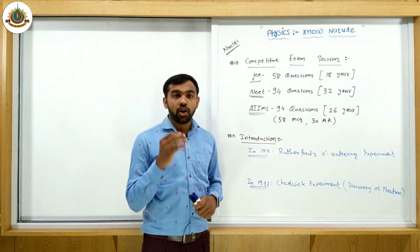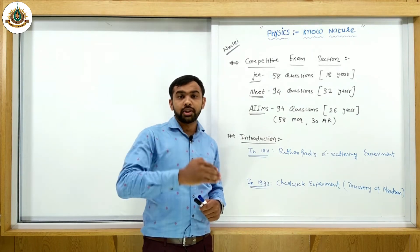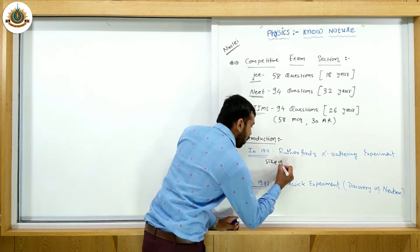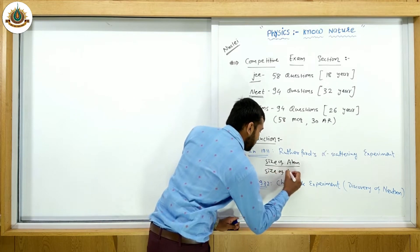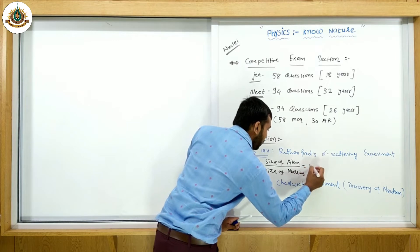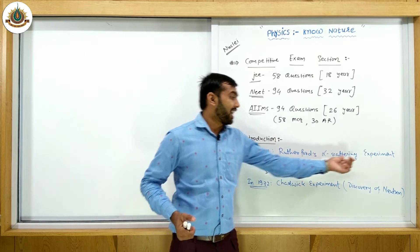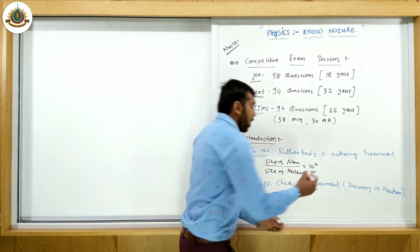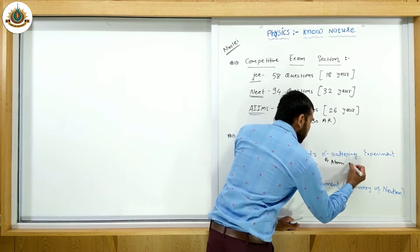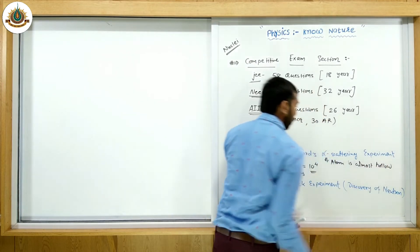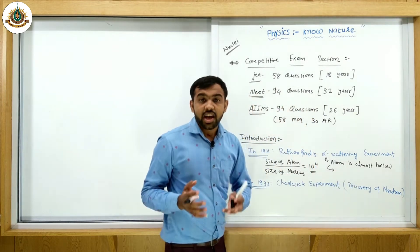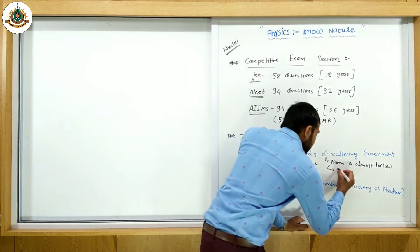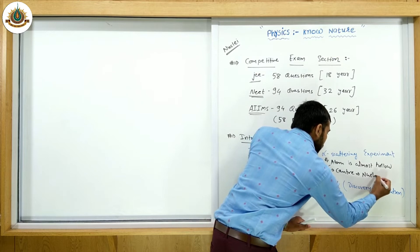Now let's introduce this chapter. We already discussed the atom. As per the Rutherford alpha scattering experiment, the size of the atom divided by the size of the nucleus is approximately 10 to the power 4. As per this experiment, the atom is almost hollow, meaning all the positive charge and most of the mass is concentrated at the center.